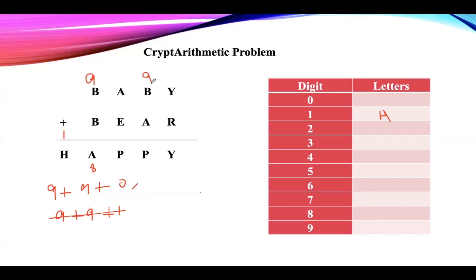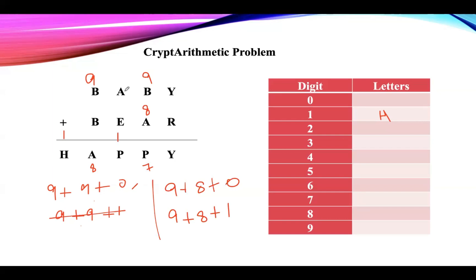Assign 9 to B and 8 to A. For this also we need to try with carry and without carry. First possibility: 9 plus 8 plus 0. Second possibility: 9 plus 8 plus 1. Taking 9 plus 8 gives 17 without carry. The value of A is 8, so after adding 8 plus 1 we already got 9. Here it is not possible to get 17 — P value is 7, and after adding A, E, A with carry you need to get 17, but there is no carry in this first case. So this is not possible.